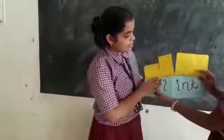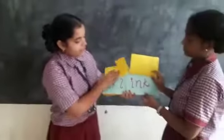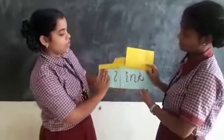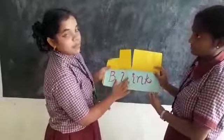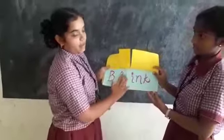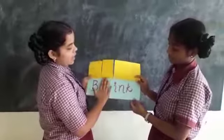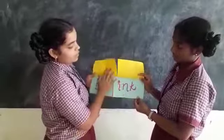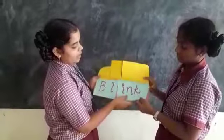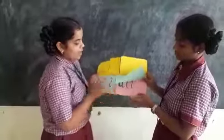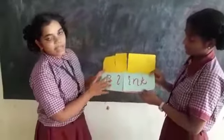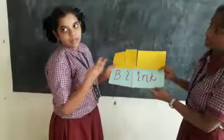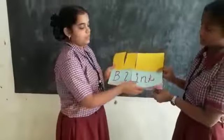And next is the word blind. Here if we close D, the word becomes blink. If we close L, the word becomes ink. And in this word I get to form three words.